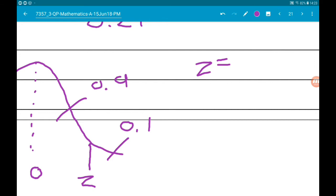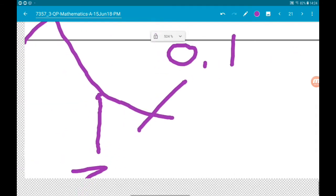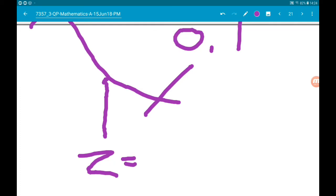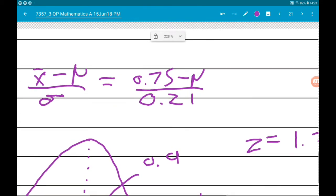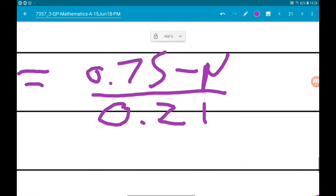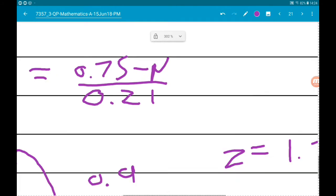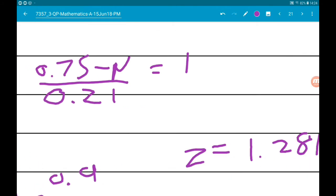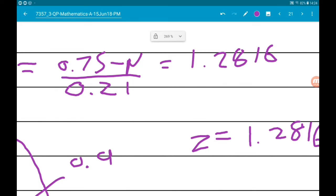That's what we know this value here is, 1.2816. What we can do now is use this, set it equal to 1.2816, and solve that for mu.